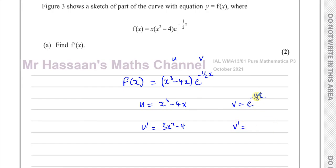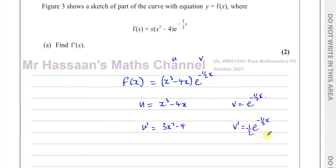To differentiate e to the power of something, it stays the same — it doesn't change. So it's still e to the power of minus a half x. However, inside this function there's another function, which is minus a half x. So I have to differentiate that, which gives minus a half, and I multiply by minus a half. This is the chain rule: e to the power of something doesn't change, then you differentiate what's inside and multiply by that. So v' equals minus a half times e to the power of minus a half x.